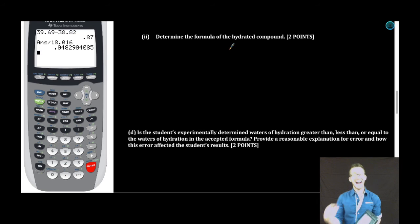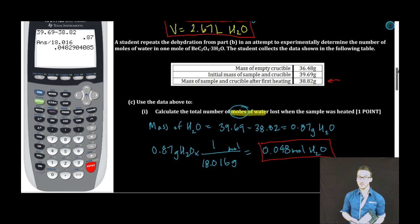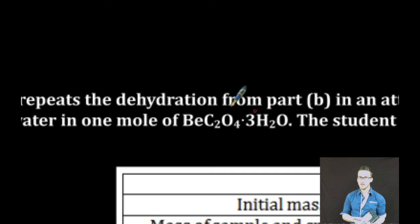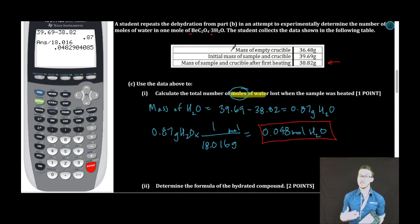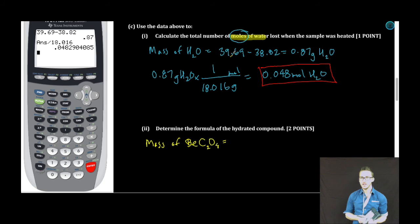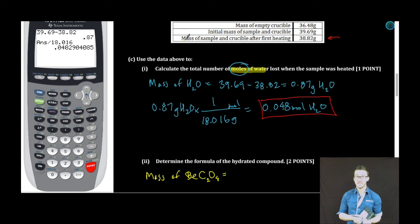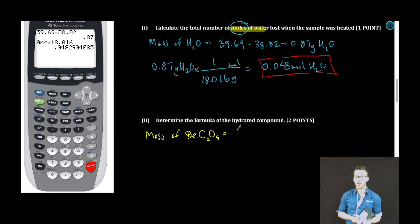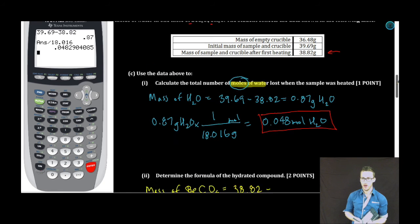We're looking to determine the formula of the hydrated compound. Remember, hydrated compound is just a ratio of moles of the anhydrous salt to water. Now, in this particular experiment, the student knows that that ratio is 1 to 3. We're just trying to experimentally verify that. We know how many moles of water we have, so now we need to know how many moles of anhydrous salt do we have. To determine how many moles of anhydrous salt, or in this case, beryllium oxalate, it's going to be a similar calculation that we just did in part I. We're going to take the mass of the sample in crucible after heating. It should just be the beryllium oxalate and the crucible. And then we're going to subtract the mass of just the crucible, the 36.48. Calculator time.